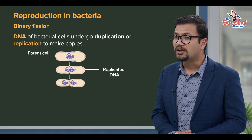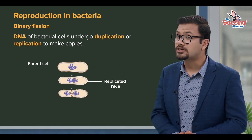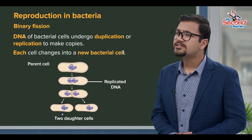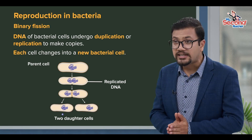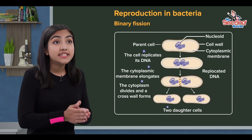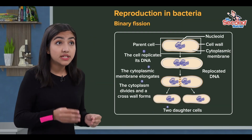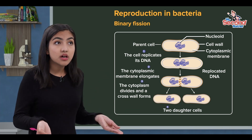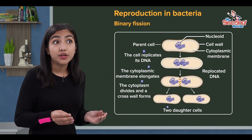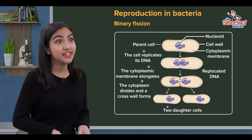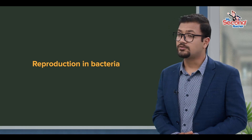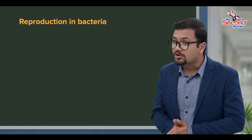DNA is first replicated — we make a copy of our DNA, resulting in two DNA copies. One DNA copy is kept on each side, so each daughter cell receives one copy. The bacterial cell then divides through cytoplasm division, completing all these steps.